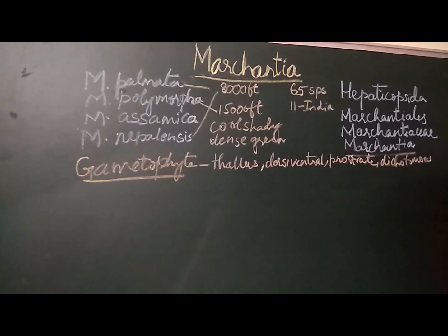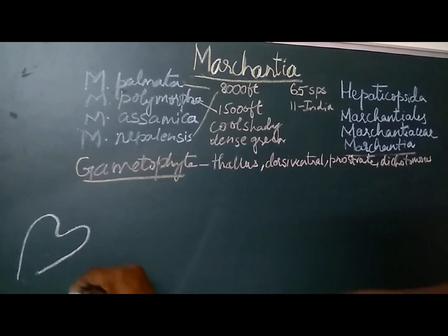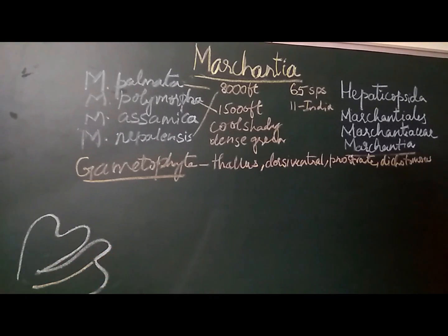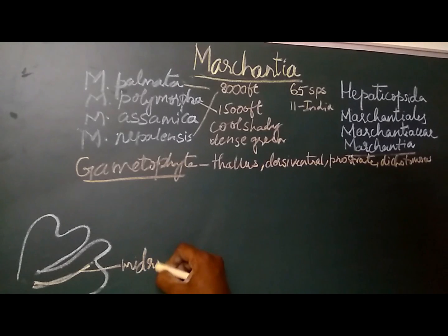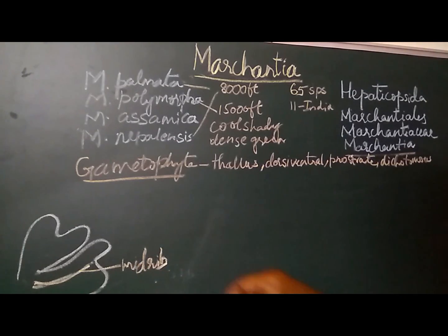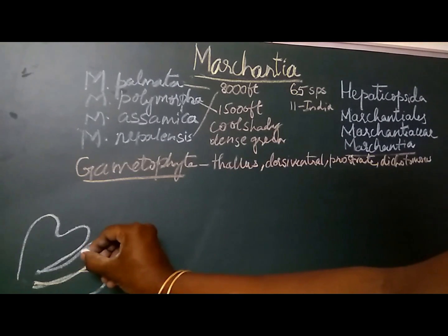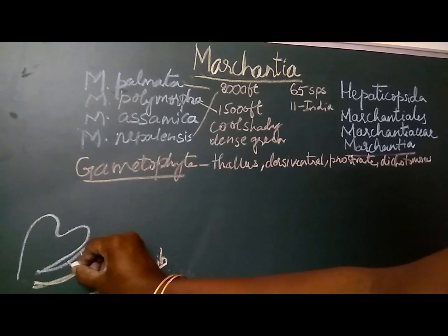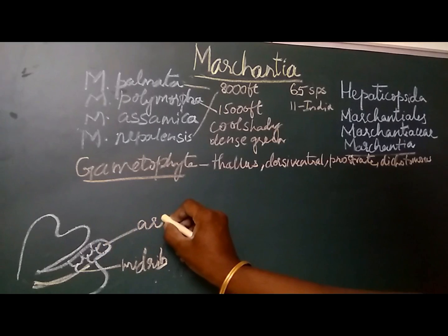When we look at the dorsal surface of the thallus, the dorsal surface is dark green in color and shows a very prominent midrib which extends from the posterior end to the anterior end. The midrib is shallow, prominent, and broad. On the dorsal surface, the whole thallus is covered by a large number of polygonal or rhomboidal areas.